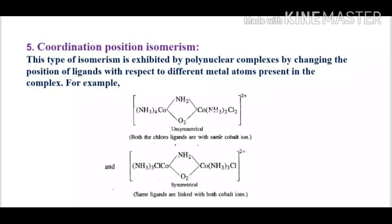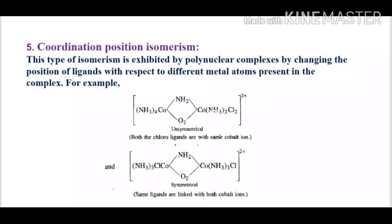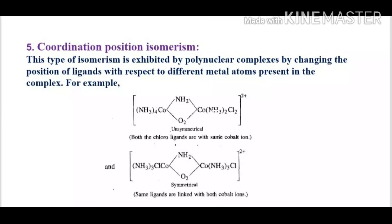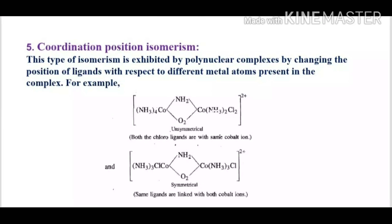The fifth type is coordination position isomerism, exhibited by polynuclear complexes by changing the position of ligands with respect to different metal atoms in the complex. In the first isomer, the left side has four amine ligands and the right side has two amine and two chloro ligands. In the second isomer, three amines and one chloro are present on each side. The difference in the position of ligands between isomers is what defines coordination position isomerism.